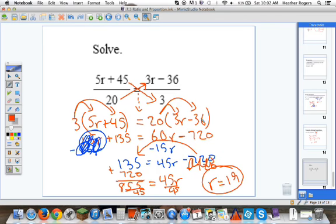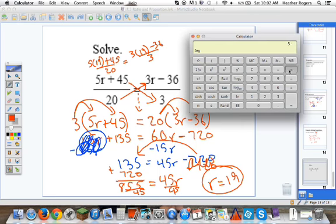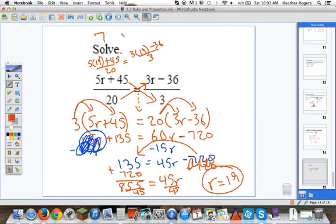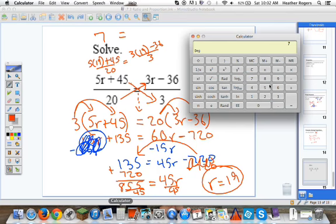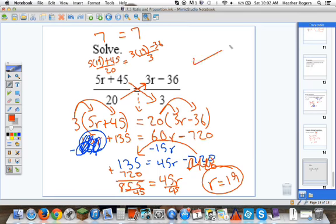You can always check here to see if this is right. Is 5 times 19 plus 45 divided by 20 equal to 3 times 19 minus 36 divided by 3? Let's do the math. 5 times 19 plus 45 divided by 20 is 7. So I get 7 on the left. Is that equal to the right side? Let's see. 3 times 19 minus 36 divided by 3 is 7. So 7 equals 7. I know I've got the problem right. So this is the type of stuff you're going to see in your homework. Let me know if you have any questions. Thanks.